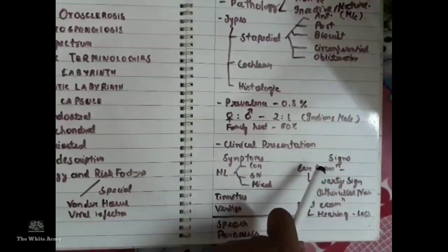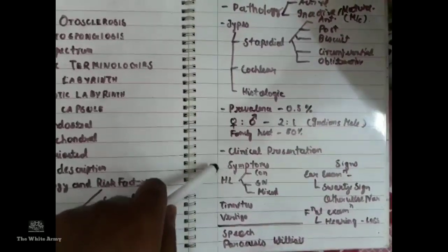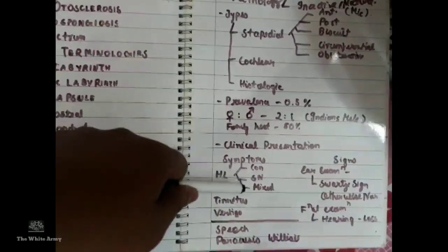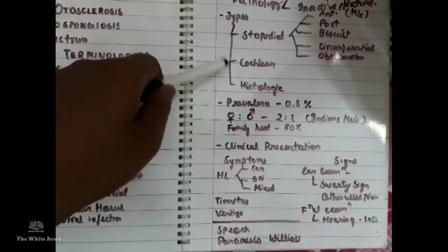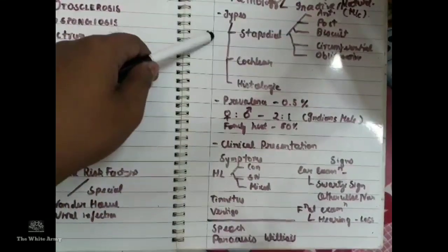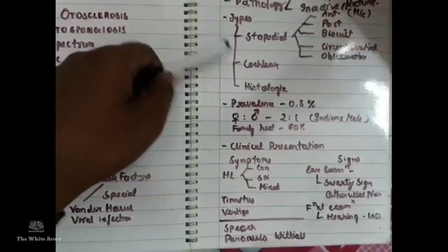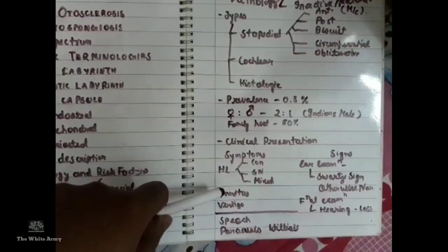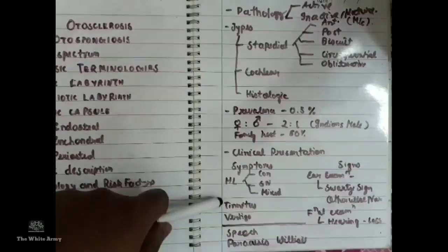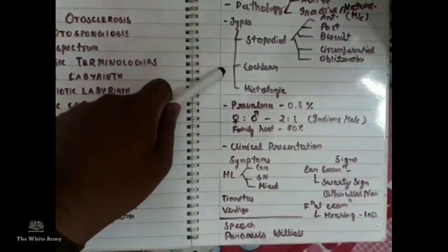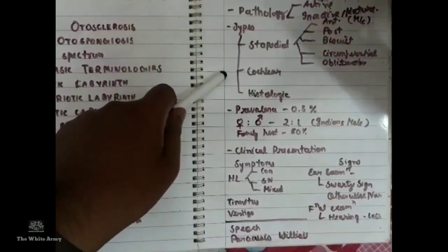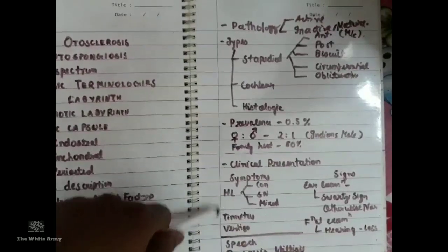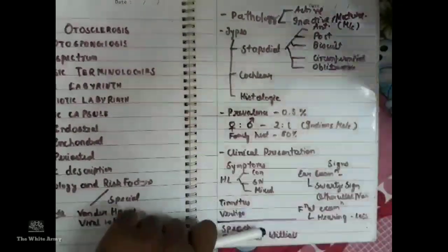Regarding clinical presentation — symptoms: the patient most commonly complains of hearing loss, which is conductive for stapedial type, sensorineural for cochlear type, and mixed if stapedial disease progresses toward the inner ear. There may be a history of tinnitus due to the association of cochlear otosclerosis with release of toxins affecting outer hair cells. Vertigo may also be associated since it is an inner ear pathology.